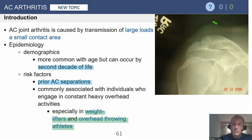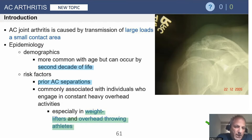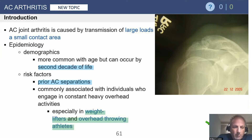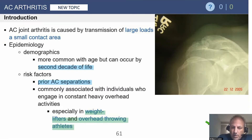There is also soft tissue swelling which often goes along with this. It's more common with aging but can occur even in the second decade of life. Risk factors include prior AC separations, and those who lift a lot of weights can get AC joint osteolysis, which we'll show in a moment, and then also arthritis as well.